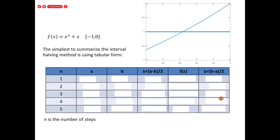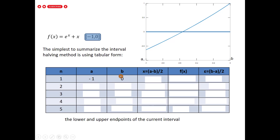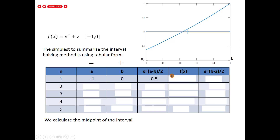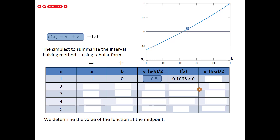To summarize the interval halving method, we use a table with columns: step number n, interval endpoints a and b, midpoint x, function value f(x), and error ε. At step 1, a = -1 and b = 0. The midpoint is (a + b) / 2 = -0.5. We evaluate f(-0.5) = 0.1065, which is positive.